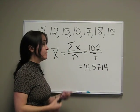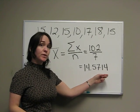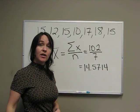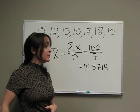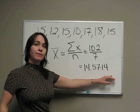102 divided by 7 is 14.5714. For our class, we're going to always round to 4 decimal places unless you're told otherwise.